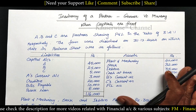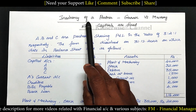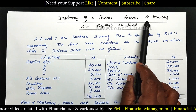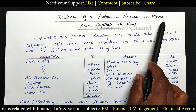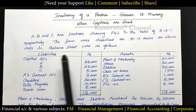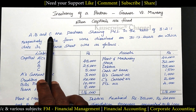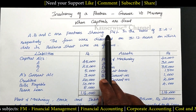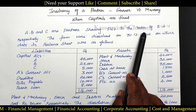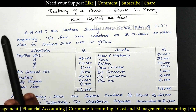Let's see the problem. Insolvency of a partner according to Garner-West Murray rule when capitals are fixed. A, B and C are partners sharing profit and loss in the ratio of 3:2:1 respectively.